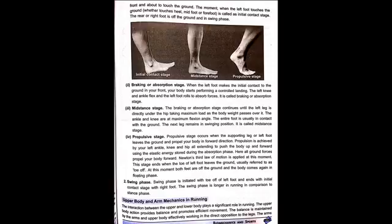The breaking or absorption stage continues until the left leg is directly under the hip, taking maximum load as the body weight passes over it. The ankle and knee are at maximum flexion angle and the entire foot is usually in contact with the ground. The other leg remains in a swinging position. This is called the mid stance stage.